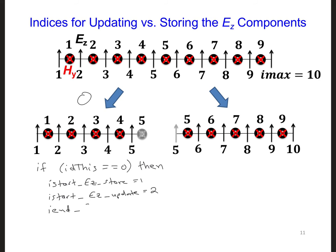Then the iEndEzStore is equal to 5 in our example here. And you don't have to use the same variable names that I am, but this is just an example. So iEndEzUpdate, the ending i value for updating field components on processor 0, that's the one we're working on right now, is also 5. And then I can have end if.